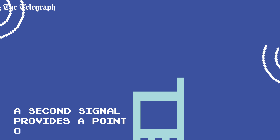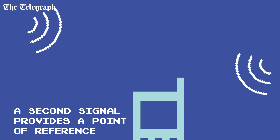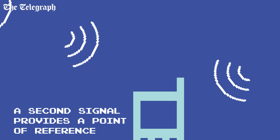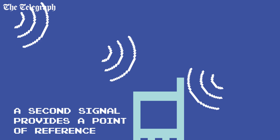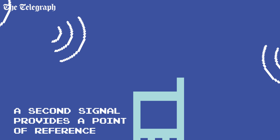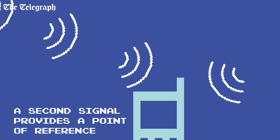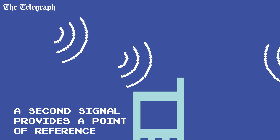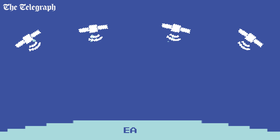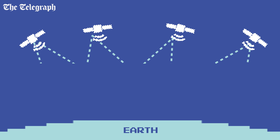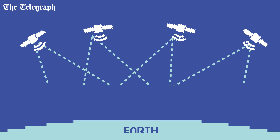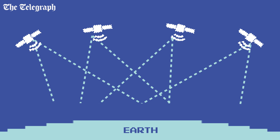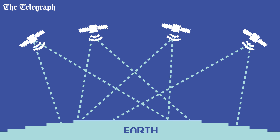A second satellite signal provides another distance to the second satellite. Now the GPS unit can calculate its approximate location in relation to the two. Signals from subsequent satellites narrow down that possible location even further.